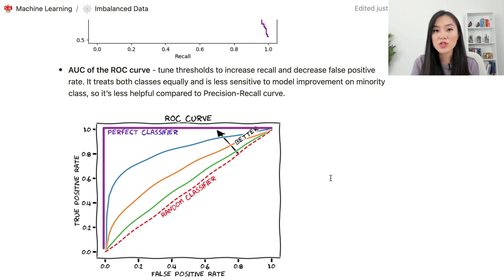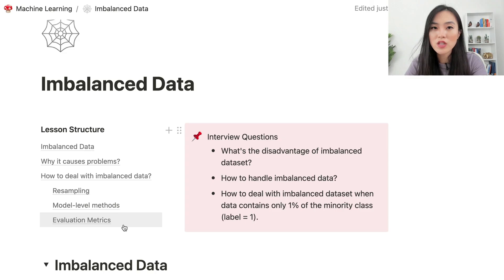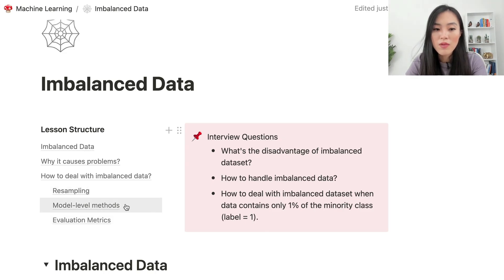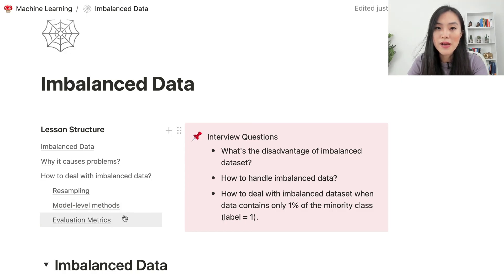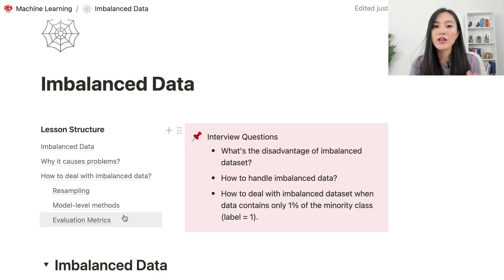Those are the metrics we can use to measure model performance for imbalanced data sets. We've covered data level methods using resampling, model level methods, and choosing the right evaluation metrics. I hope you now have a good idea of why imbalanced data sets cause problems and how to handle them properly. I'll see you in the next video.